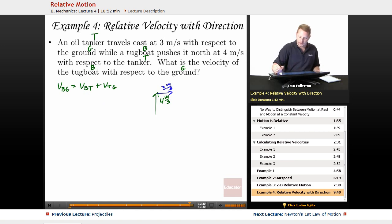So VBG is going to be the vector sum, right there just like we've done before, where that's a 3-4-5 triangle, so that's going to be 5 meters per second.